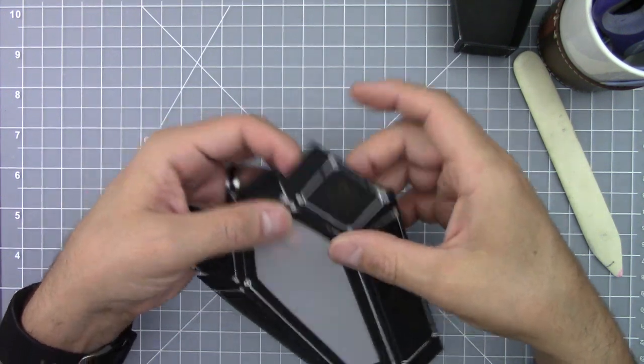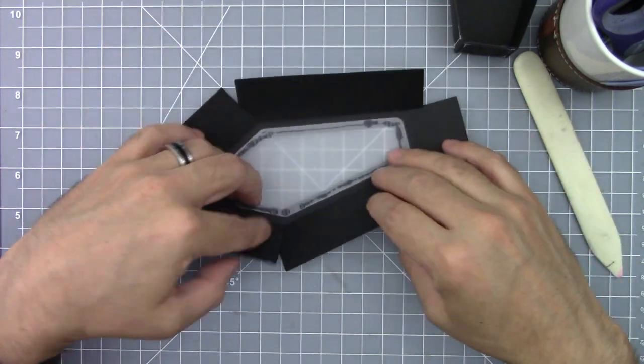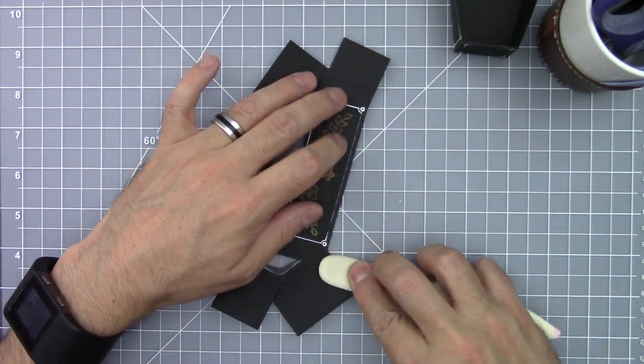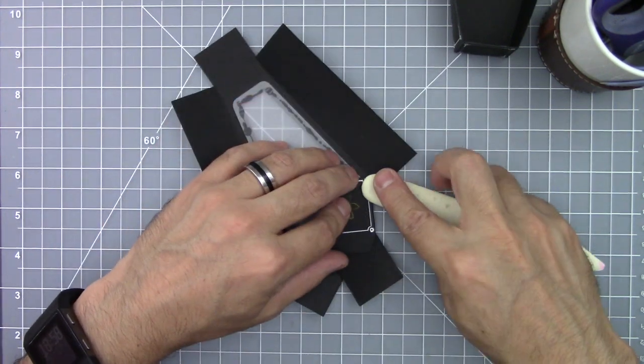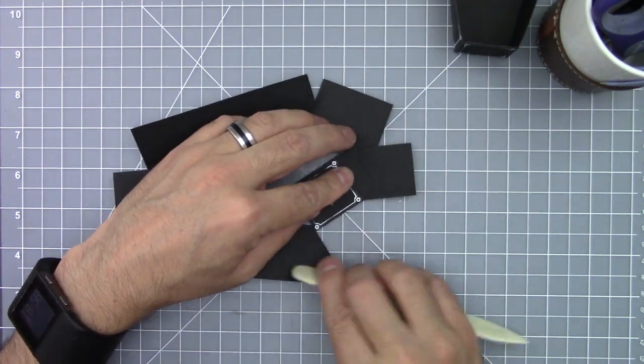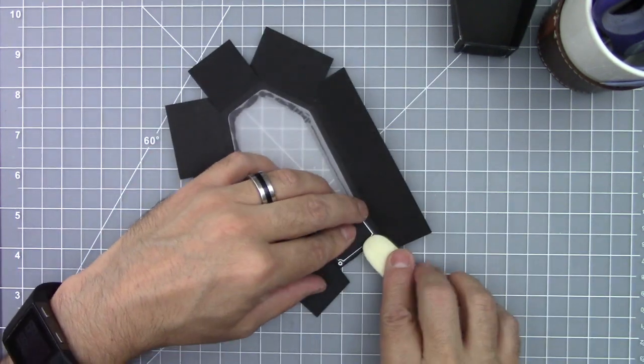Once you've pre-folded all the sides, turn it around and use your bone folder to crease all the edges.